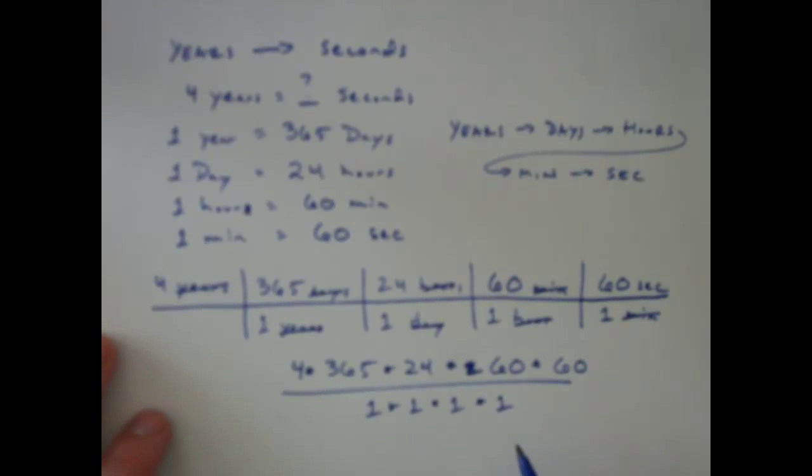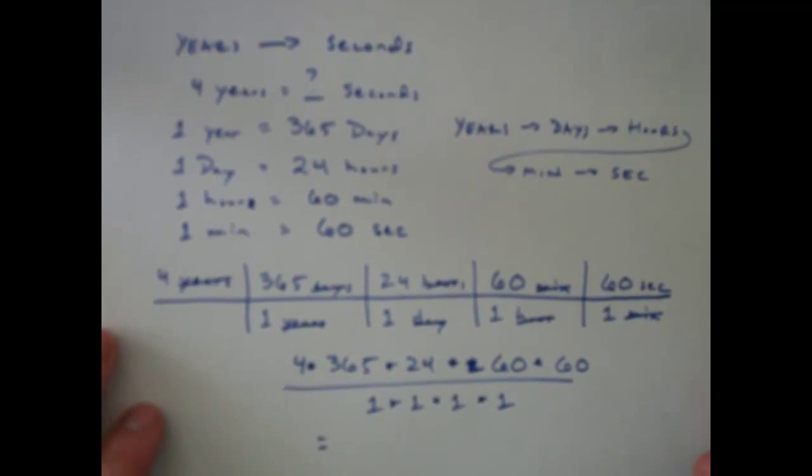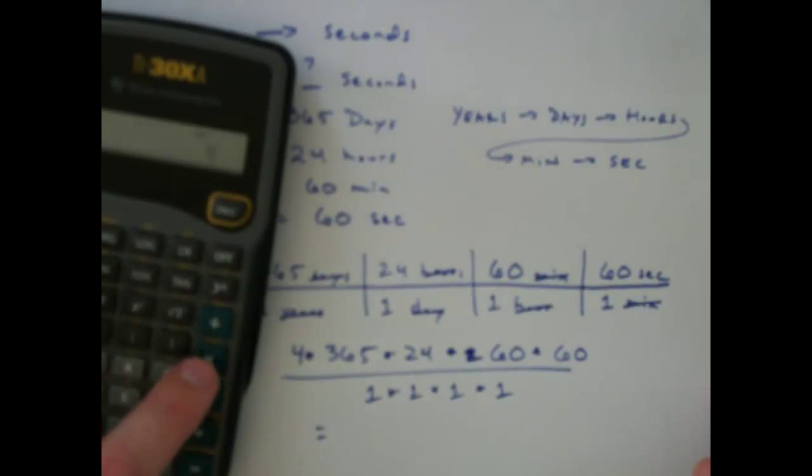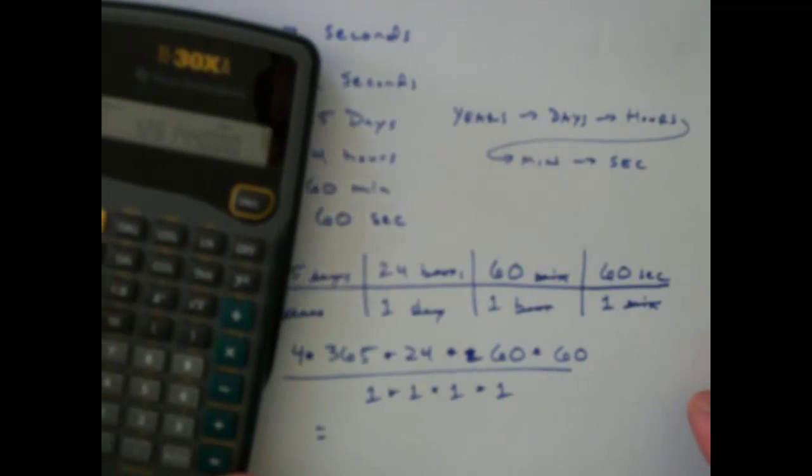But I know all that's just going to equal 1. If I plug this into my calculator, I can see that I do 4 times 365 times 24 times 60 times 60. Oh my gosh, that's a huge number.